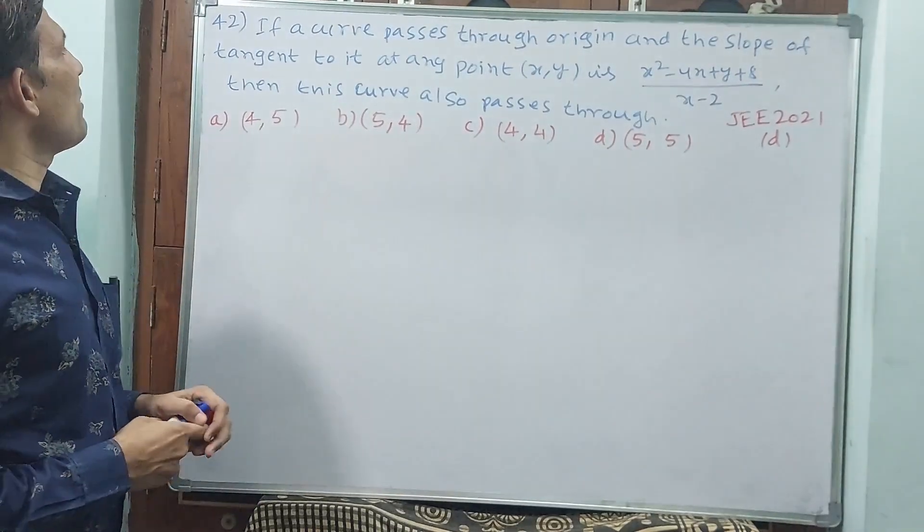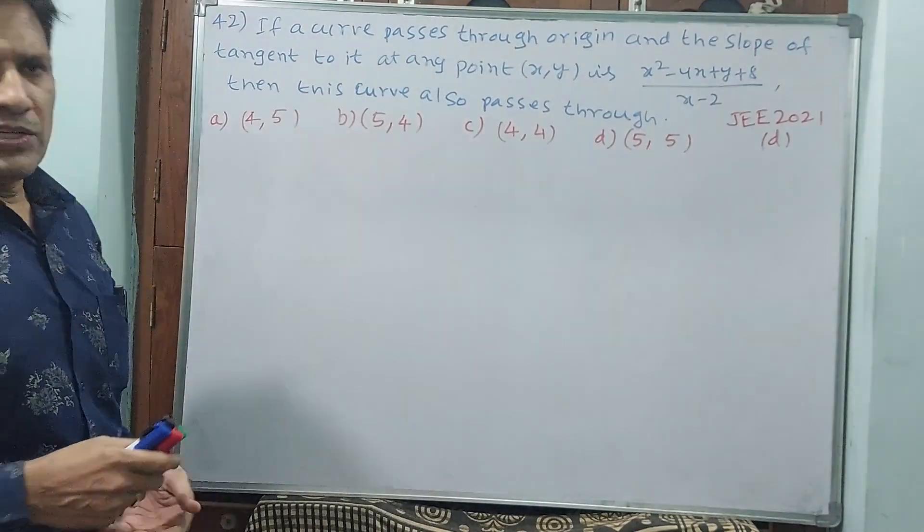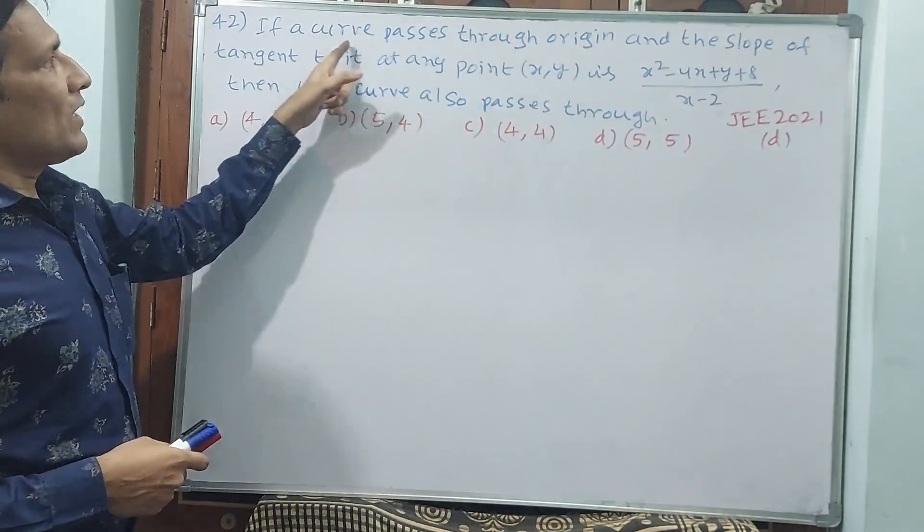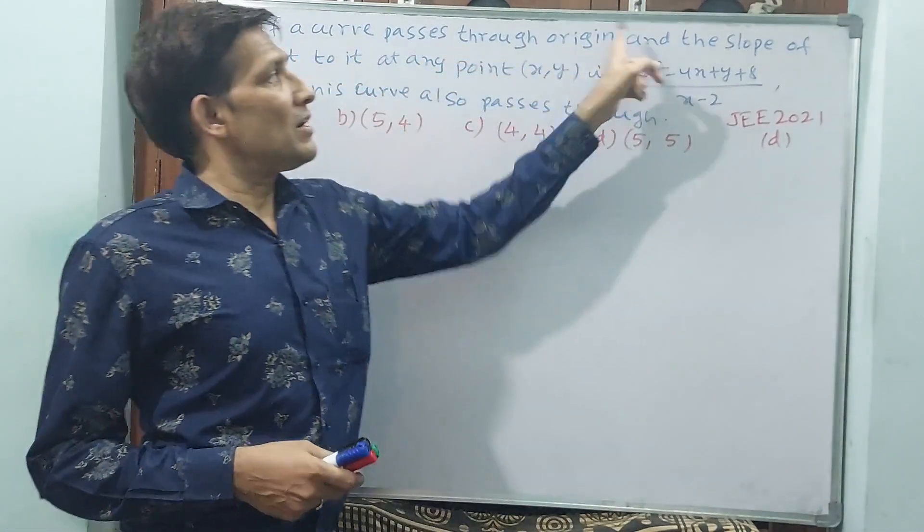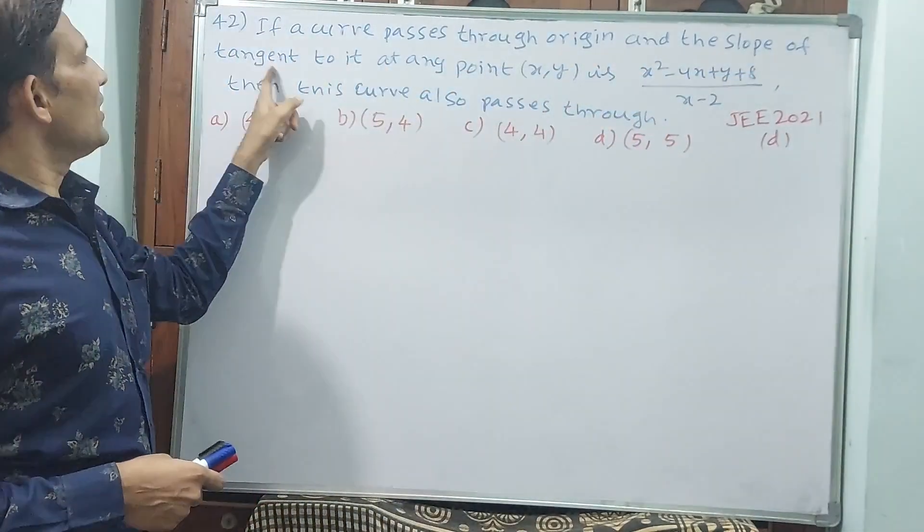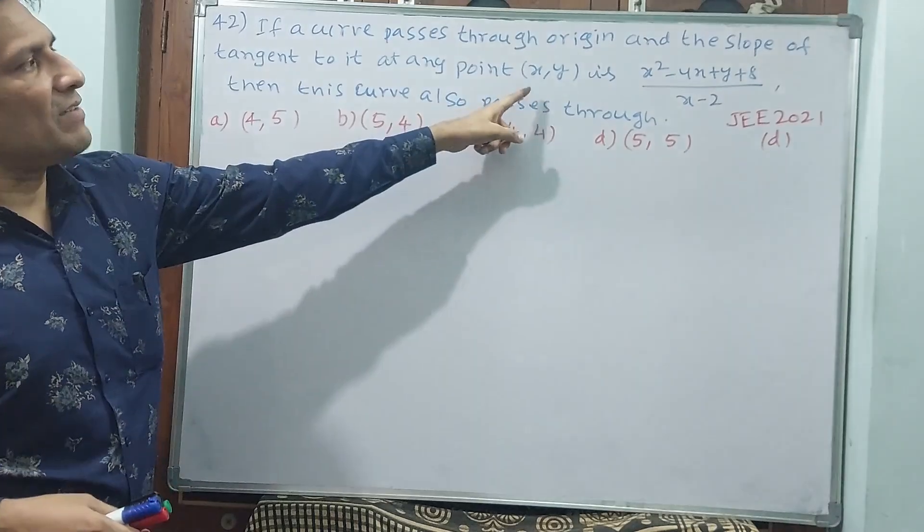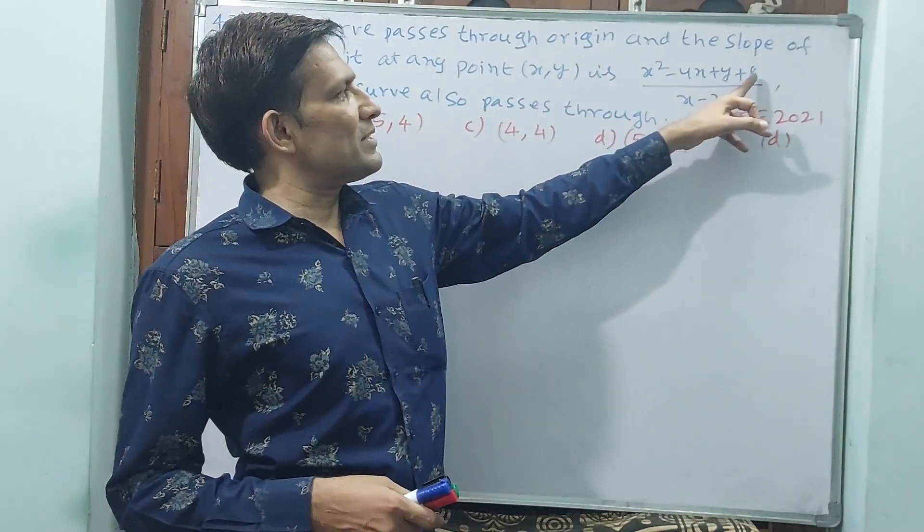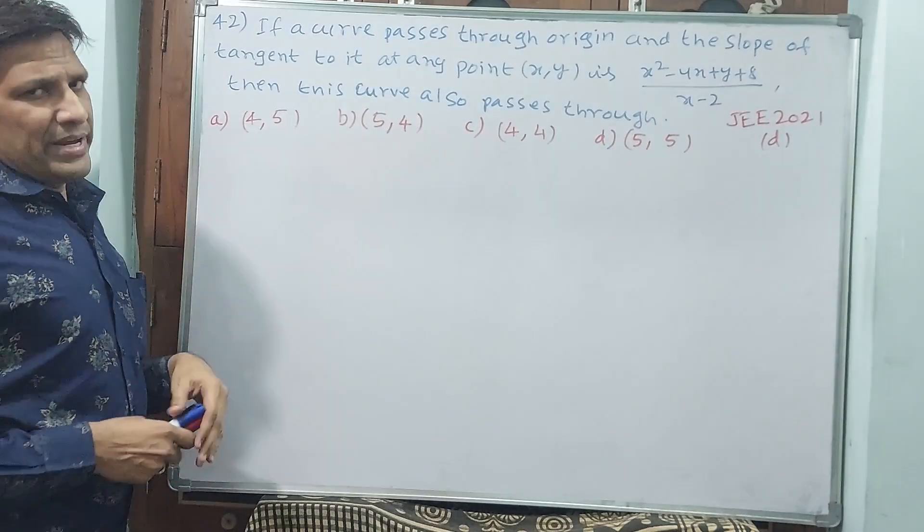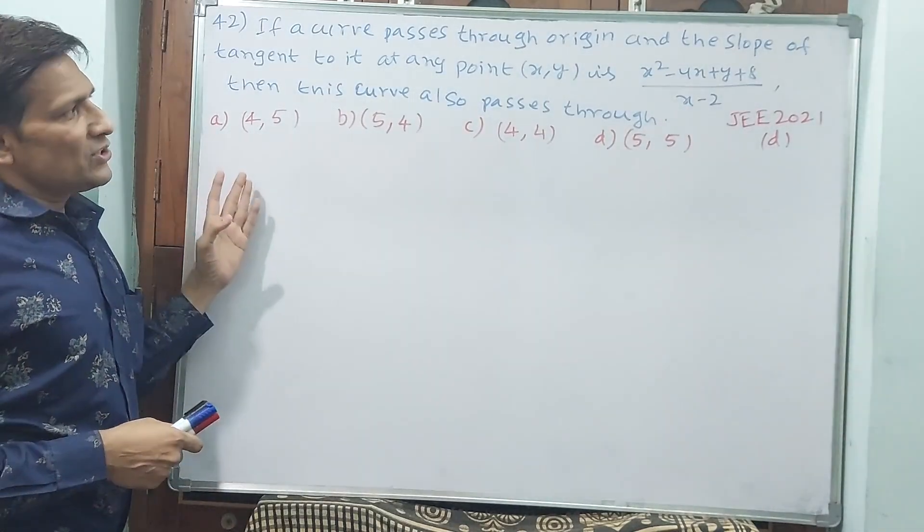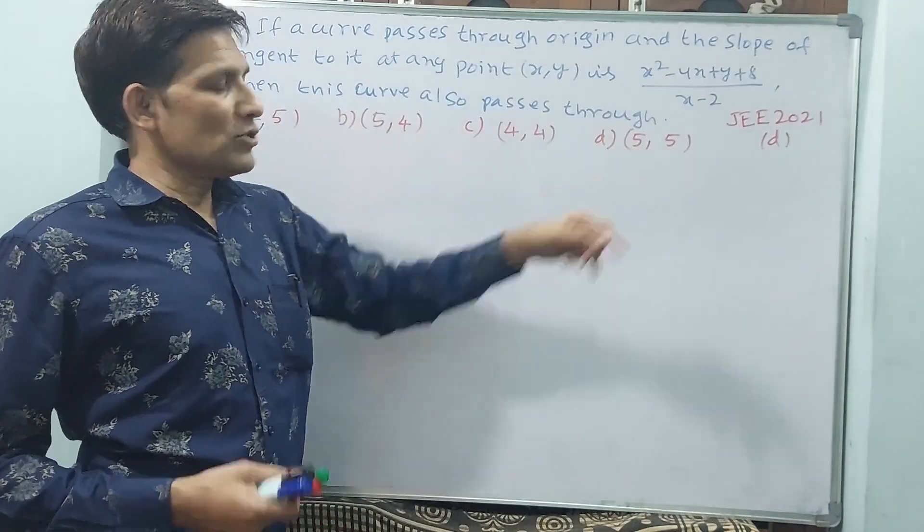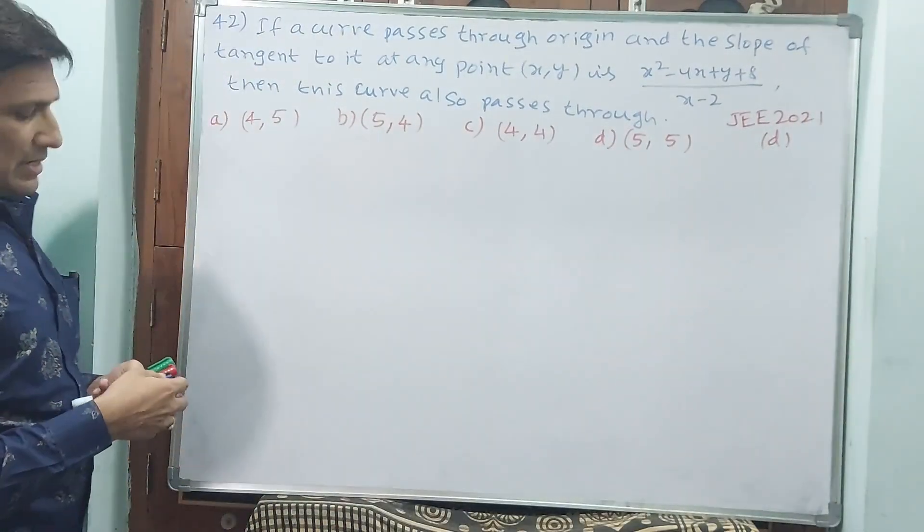Okay, let us see question number 42. This is also the 2021 question. If a curve passes through the origin and the slope of the tangent to it at any point (x,y) is x² - 4x + y + 8 divided by x - 2, then this curve also passes through the point. Answer should come D. Let us see how it is going to come out.